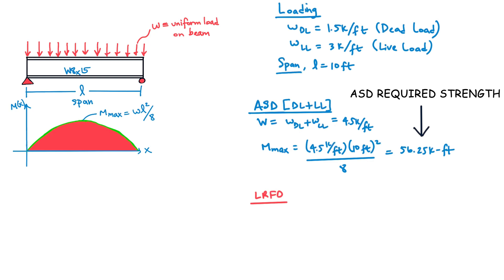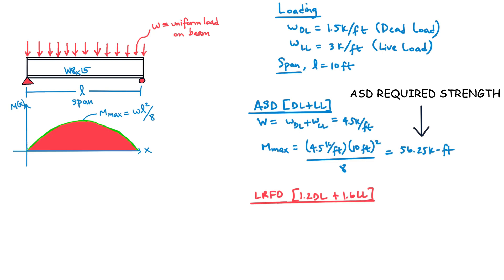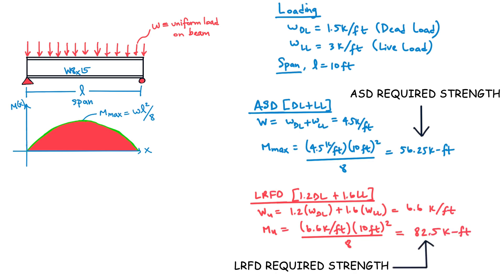Similarly, for the LRFD design philosophy, the governing load combination is 1.2 times dead load plus 1.6 times live load, which gives a total factored uniform load of 6.6 kips per foot. Therefore, the maximum required strength for this member under LRFD is 82.5 kip-feet. As you can see, required strength applies to both ASD and LRFD, but the values are not the same.